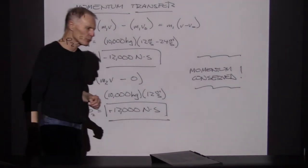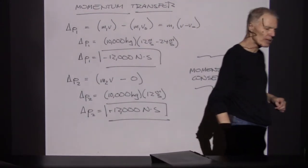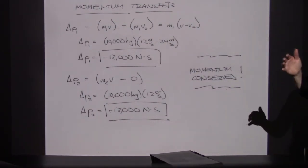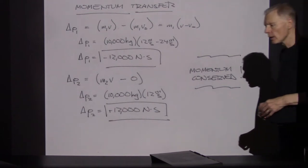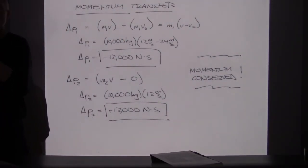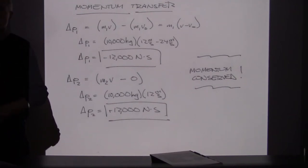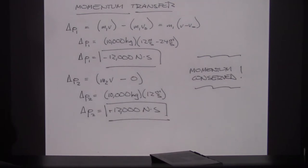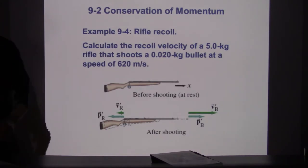You can trace this momentum conservation back to the idea that when contact is made between objects, the forces are equal and opposite and last for the same amount of time. If the forces are equal and opposite and the force that object 1 experiences matches the force on object 2 for the same amount of time, then the momentum transfers will match — whatever object 1 gives up, object 2 will acquire.